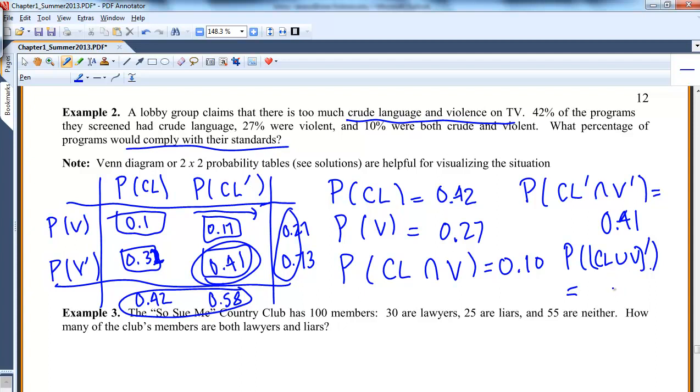By De Morgan's Law that we proved earlier, this is the same thing as this. And again, that's 0.41. Let me see if I want to do any others. Example 3 is somewhat similar to example 2 that we just did.